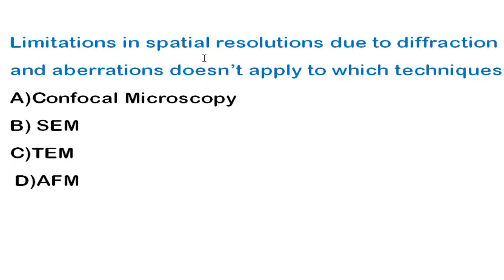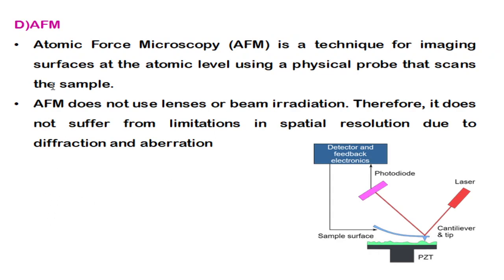The next question: limitation in spatial resolution due to diffraction and aberration does not apply to which of the following techniques? The correct answer is AFM — atomic force microscopy. It is used for imaging sample surfaces at the atomic level using a physical probe. The main advantage is that it doesn't use optical lenses or an electron beam, so it does not suffer from limitations in spatial resolution due to diffraction and aberration.